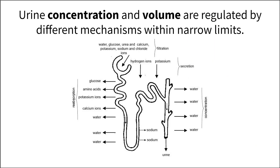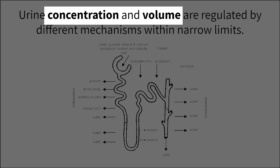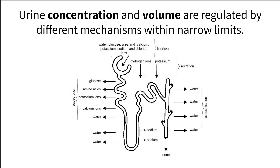While it is helpful to understand how urine is made in a general sense, let's also consider that the volume and concentration of urine can differ greatly and is dependent upon different hormonal mechanisms that control both factors.